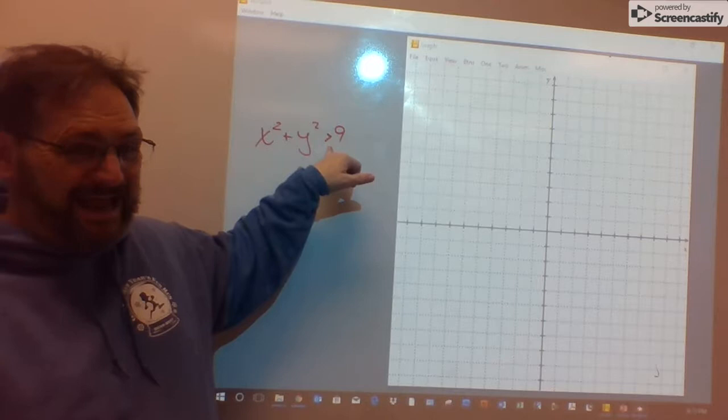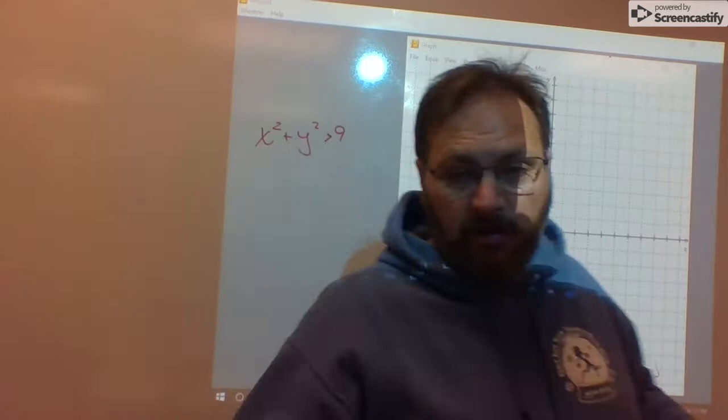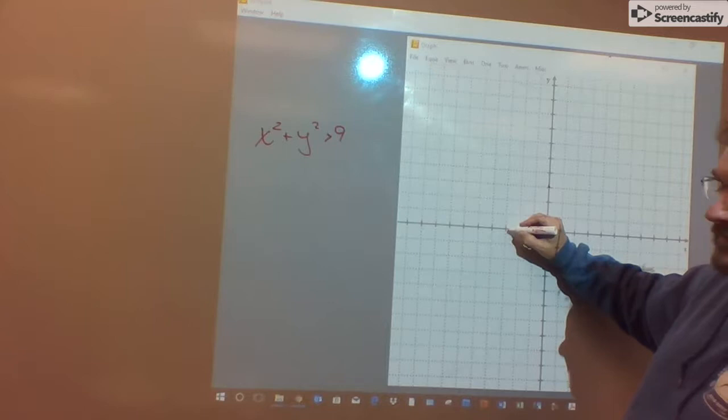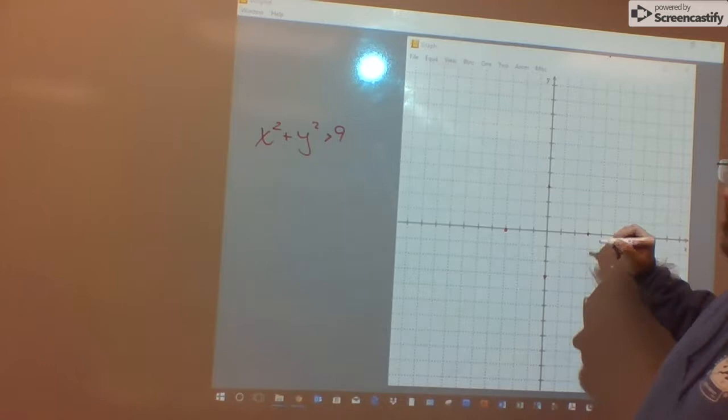So center at the origin, do a radius 3 units on all the way around. So from the origin, I can go up 3, left 3, down 3, and right 3, and dash in a circle.